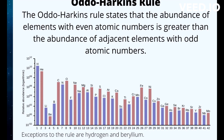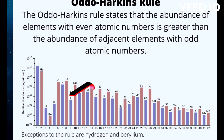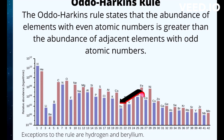For example, oxygen, atomic number 8, is more abundant than either nitrogen, atomic number 7, or fluorine, atomic number 9. Calcium 20 is more abundant than potassium 19 or scandium 21.